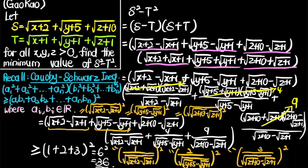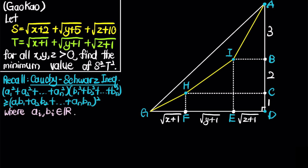Now we'll look at a second solution using geometry. We construct a right triangle ADG. We let GF = √(x+1), FE = √(y+1), and ED = √(z+1). We also construct three segments: CD = 1, BC = 2, and AB = 3.